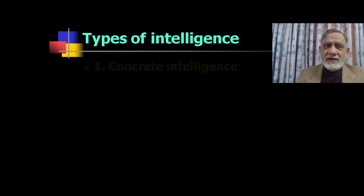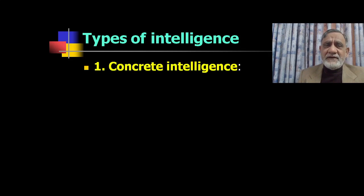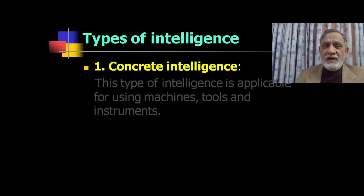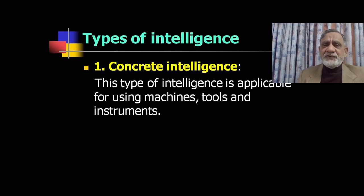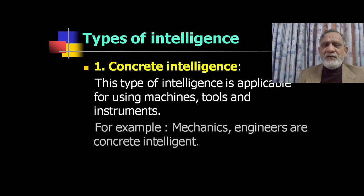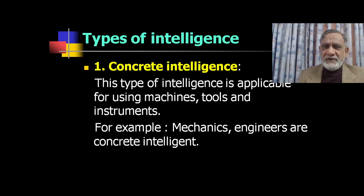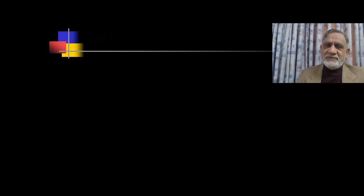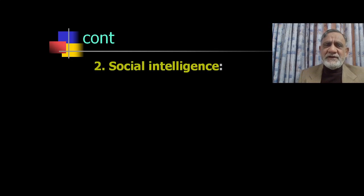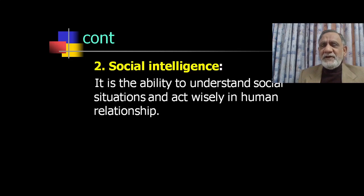Now, what are the types of intelligence? Three major types are described. First is concrete intelligence — this type of intelligence is applicable for using machines, tools, and instruments. For example, a mechanic or engineer who uses intelligence in technical processes — this is called concrete intelligence. The second type is social intelligence — it is the ability to understand social situations and act wisely in human relationships.